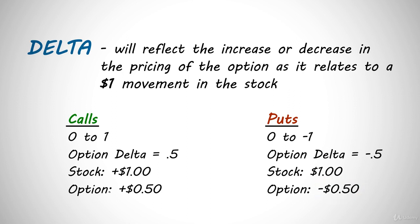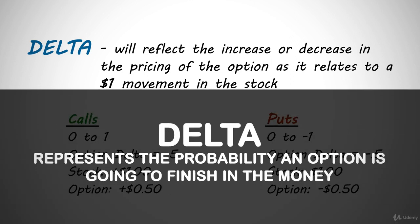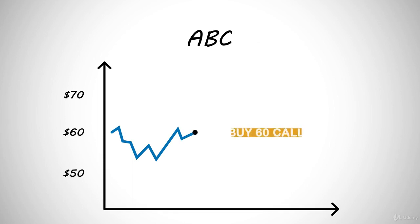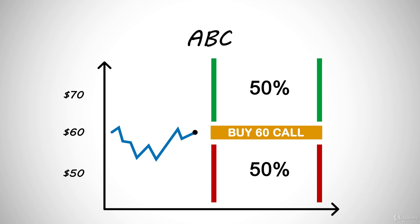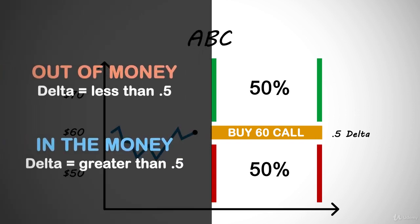At this point you're probably thinking, what causes an option's delta? The delta represents the probability an option is going to finish in the money. For example, if the stock ABC is trading at a price of $60 and you buy the 60 strike price call, the option theoretically has a 50-50 chance of finishing in the money. ABC could go up and finish in the money, or it could go down and finish out of the money. For this reason, the option will be represented by a 0.5 delta. Options that are out of the money will have a delta less than 0.5 because they have less than a 50% chance of finishing in the money, while options currently in the money will have a delta greater than 0.5 because they have a greater chance of finishing in the money.